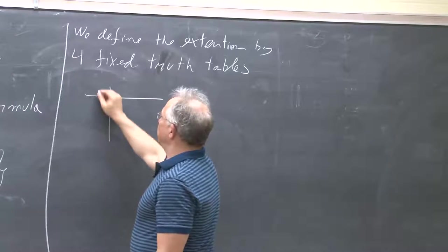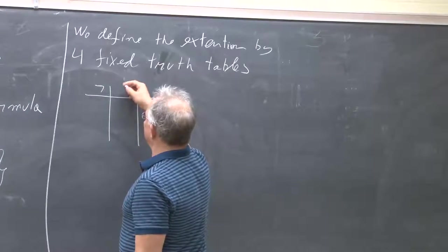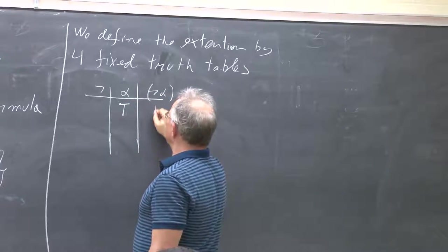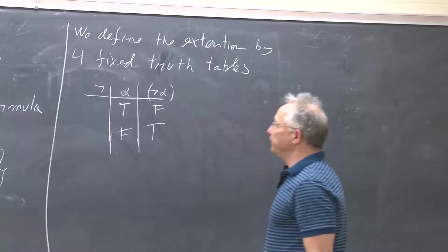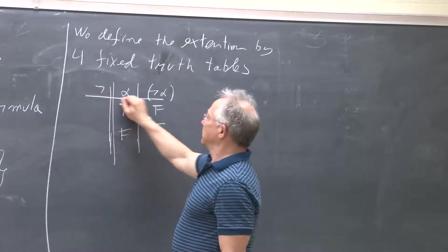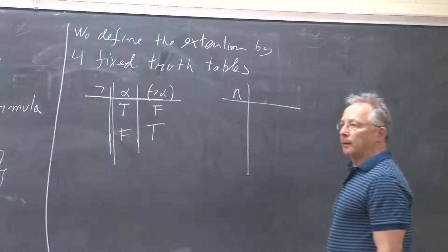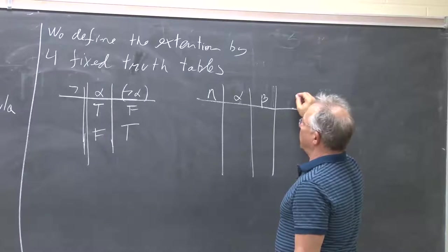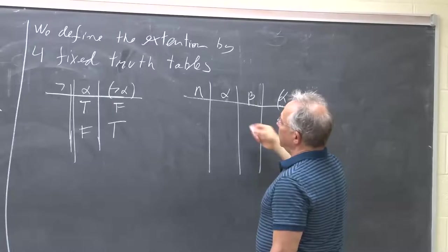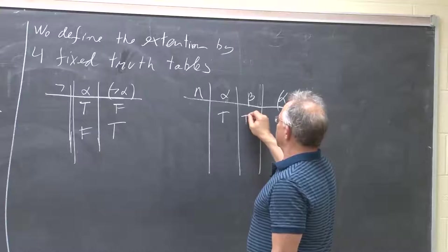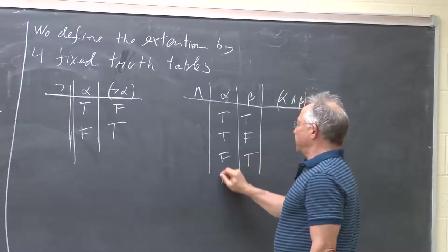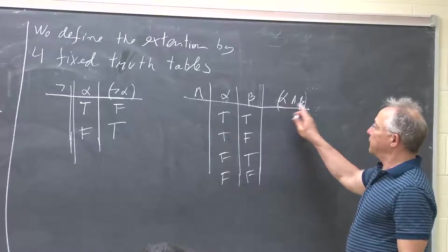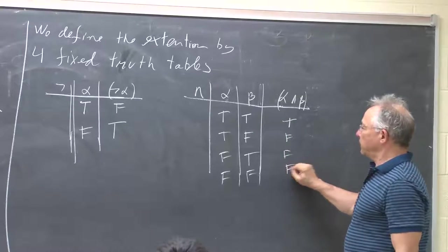The truth table for negation: if alpha is true, then negation of alpha is false; if alpha is false, then negation of alpha is true. The truth table for wedge (AND): if both alpha and beta are true it's true; if alpha is true and beta is false it's false; false and true gives false; false and false gives false. So wedge is true if and only if both are true.